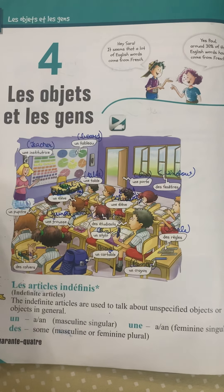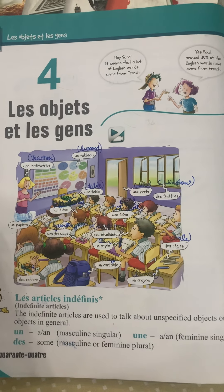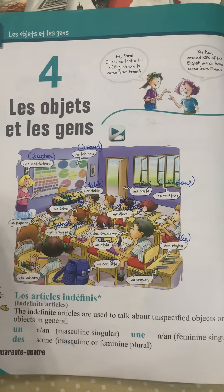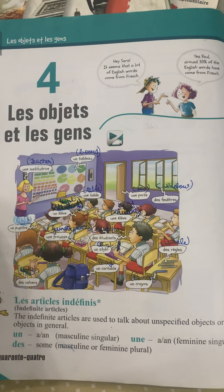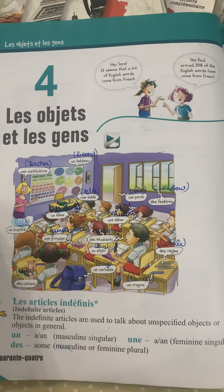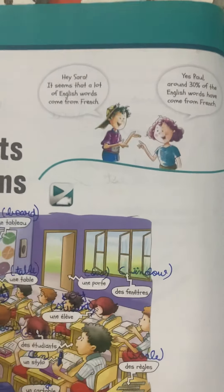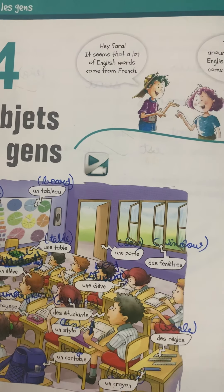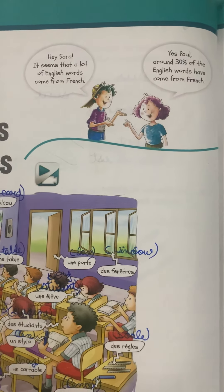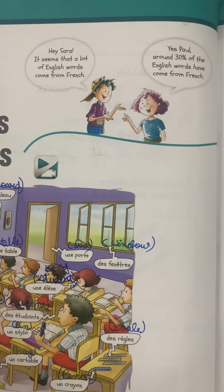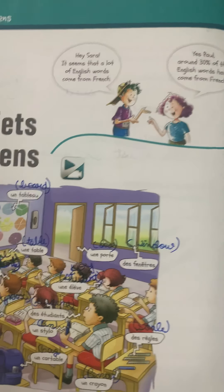Chapter 4: Les Objets et Les Gens — The Objects and the People. Today we are going to study this chapter and the various things which surround us. Hey Sarah, it seems that a lot of English words come from French. Yes Paul, around 30% of English words have come from French.